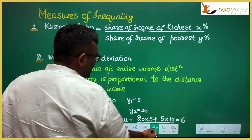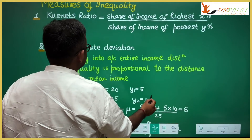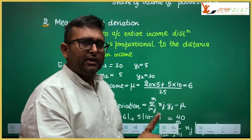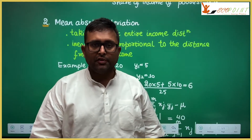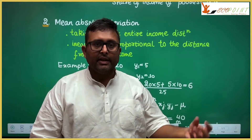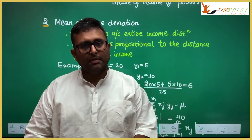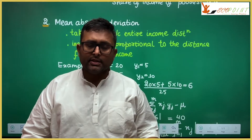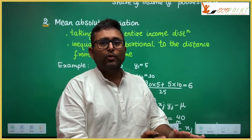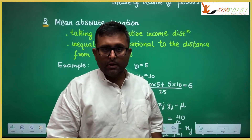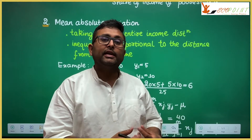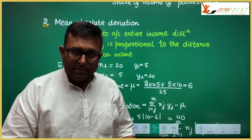The second measure is mean absolute deviation. We have already seen two earlier measures of inequality: range and Kuznets ratio. In range you were taking only the maximum and minimum. In Kuznets ratio you are also taking only the richest and poorest percentiles of the population. But mean absolute deviation is an improvement because it takes into account the entire income distribution.